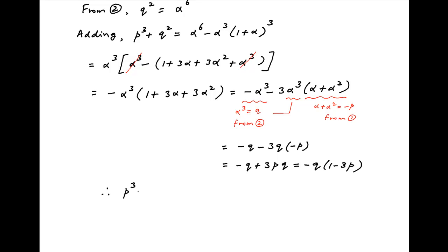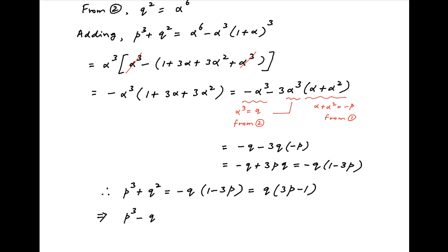Therefore, p cubed plus q plus q squared equals minus q times (1 minus 3p). Moving all terms to the left hand side, we get p cubed minus q times (3p minus 1) plus q squared equals 0. And this is the required relation.